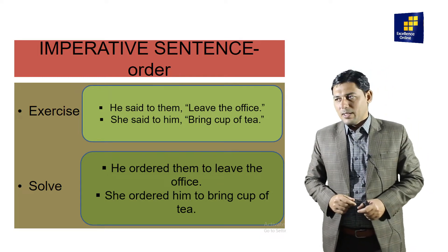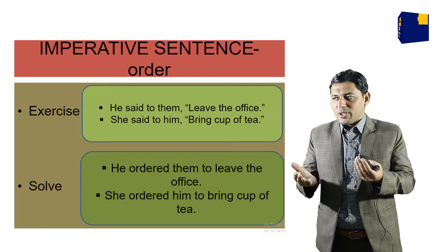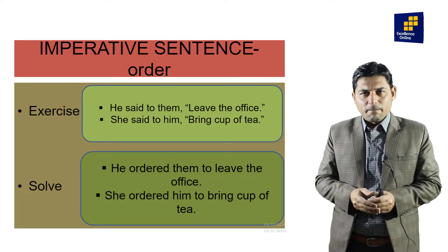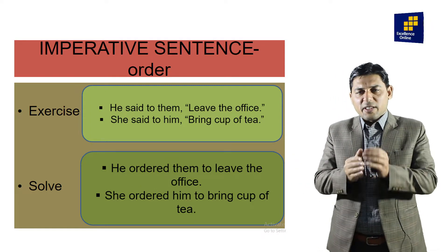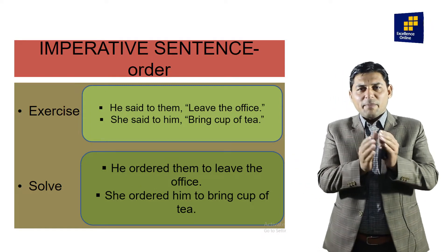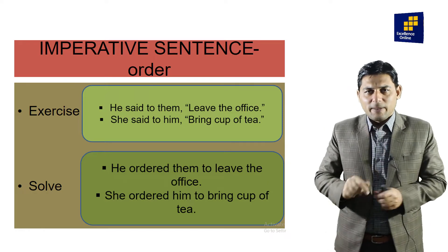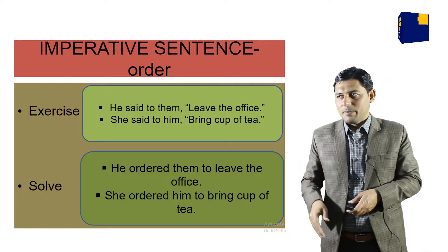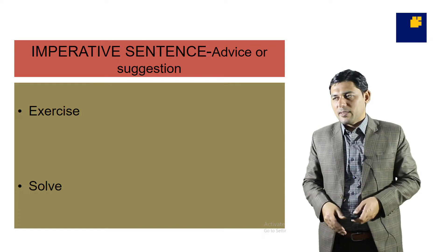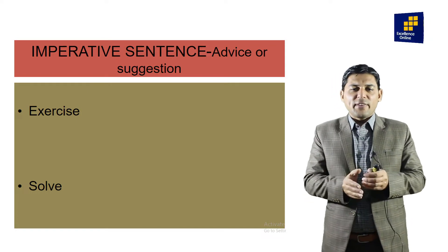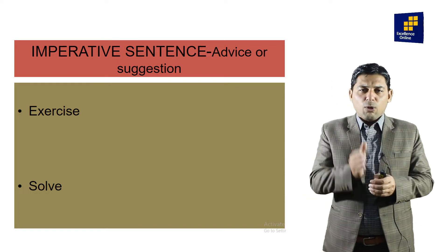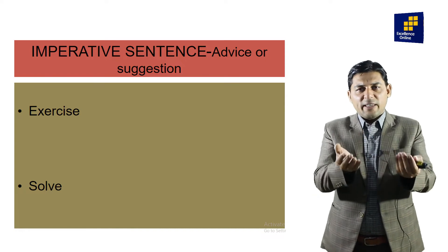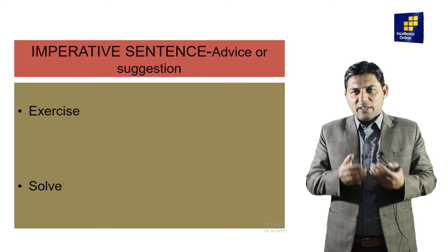Second example: 'She said to him, bring a cup of tea.' This is again an order. So: 'She ordered him to bring a cup of tea.' The article 'a' is retained. Number three: besides order and request, we have another mood — suggestion or advice.